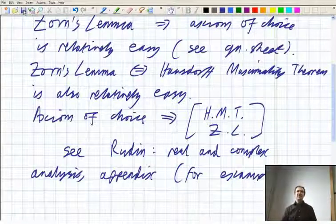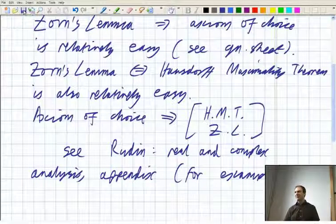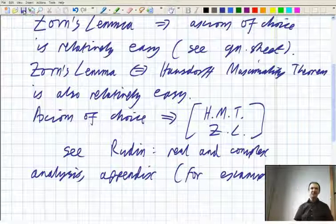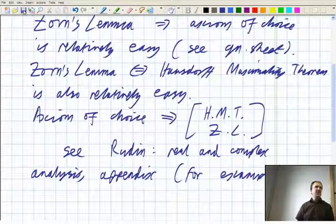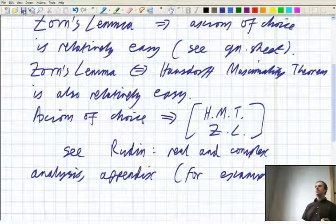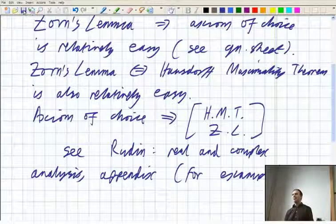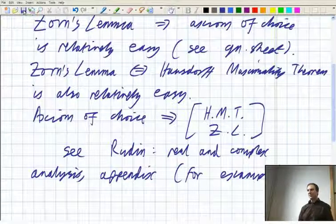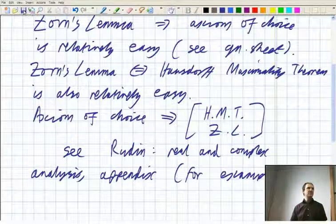Not everybody accepts this. It is independent, again, of the other axioms of set theory. So you don't necessarily have to accept the axiom of choice. If you don't use the axiom of choice, then some of the theorems become untrue. But most of the results that we want in this module are still true for separable normed spaces, ones which have got a countable dense subset. Most of the things can be proved in those settings anyway.